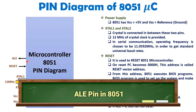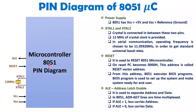The ALE signal — Address Latch Enable — is provided by the 8051. When interfacing external memory, pins AD0 to AD7 are time-multiplexed address and data lines. To separate the address from the data, we need the ALE signal. When ALE is 1, AD0–AD7 carry addresses; when ALE is 0, AD0–AD7 carry data.